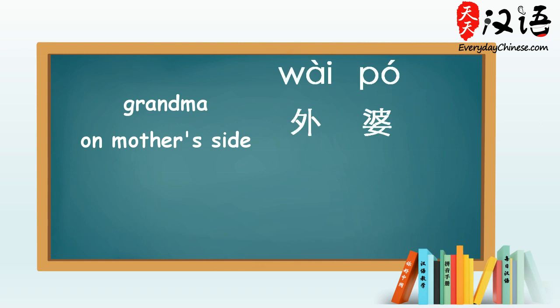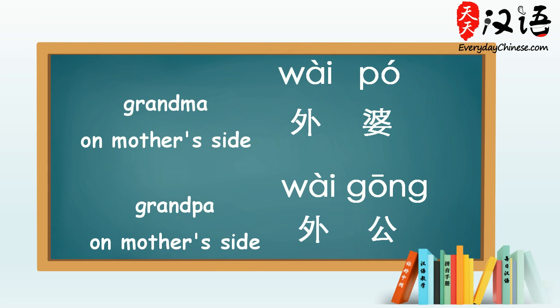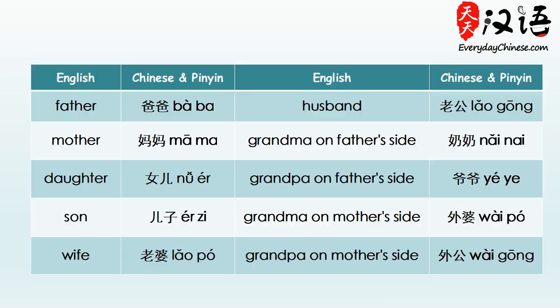Grandma on father's side 奶奶, Grandpa on father's side 爷爷, Grandma on mother's side 外婆, Grandpa on mother's side 外公. Now you know how to say mother, father, and these family members.